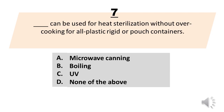Blank can be used for heat sterilization without overcooking for all plastic rigid or pouch containers. A. Microwave canning. B. Boiling. C. UV. D. None of the above.